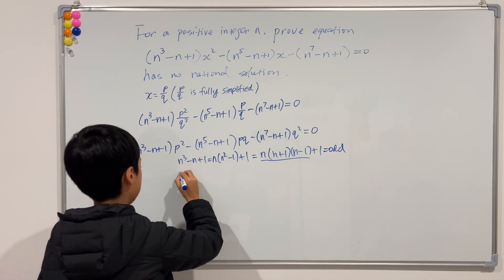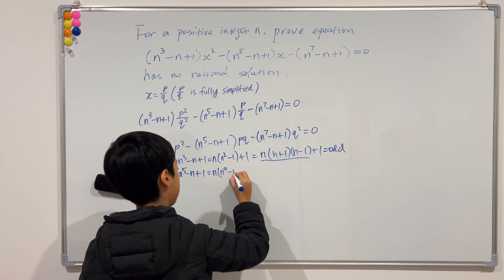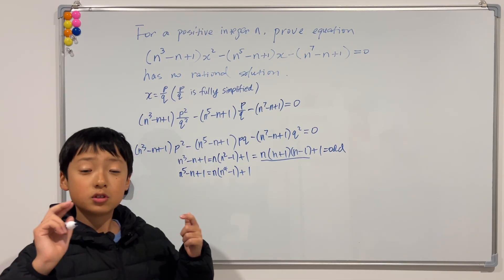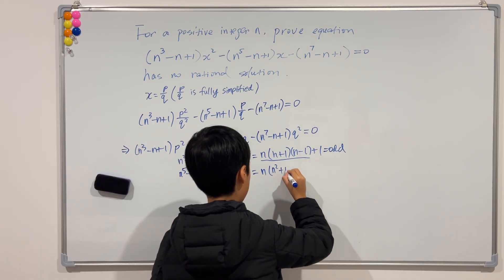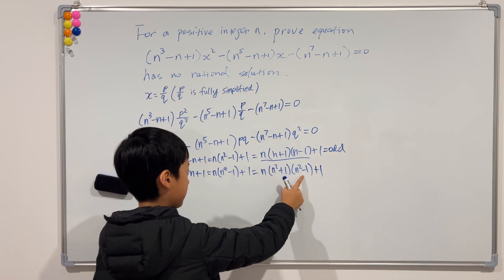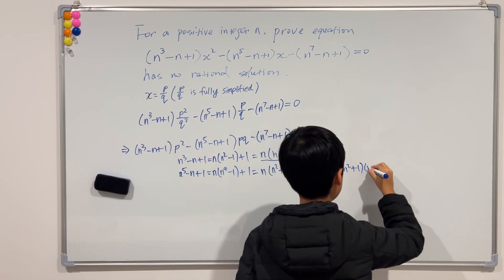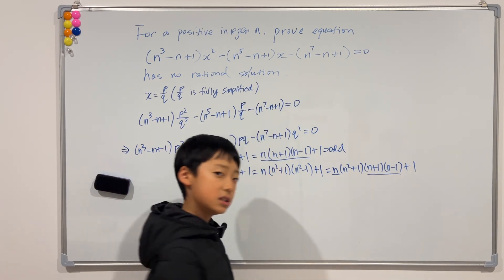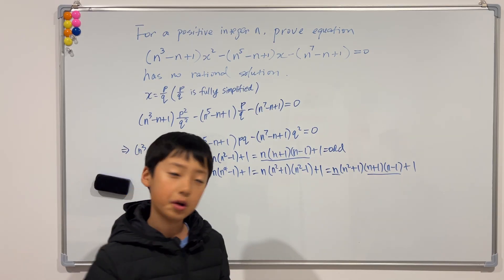Now let's look at the second coefficient: n to the fifth minus n plus 1. This equals n times n to the fourth minus 1, plus 1. We think of n to the fourth as n squared squared, so we can factor it as n times n squared plus 1 times n squared minus 1, plus 1. And we can factor n squared minus 1 into n plus 1 and n minus 1. So we get n times n squared plus 1 times n plus 1 times n minus 1, plus 1. Again, we have three consecutive integers as a factor, so that product is even. Even times any number is even, and even plus 1 is odd. So n to the fifth minus n plus 1 is odd.